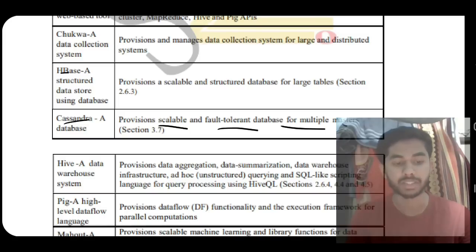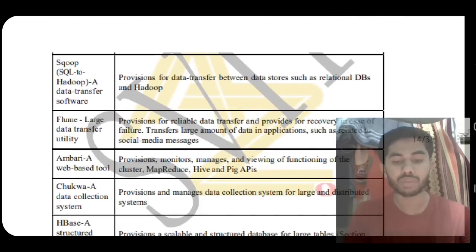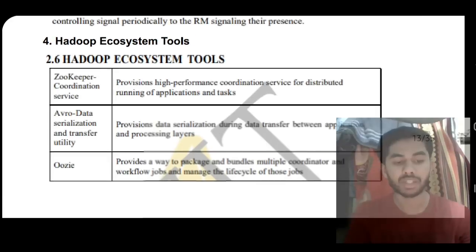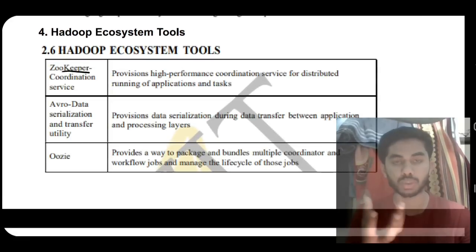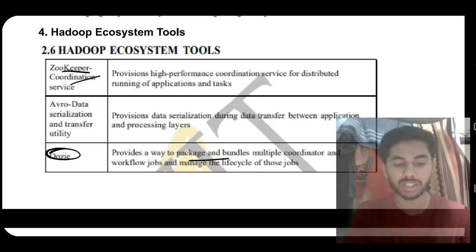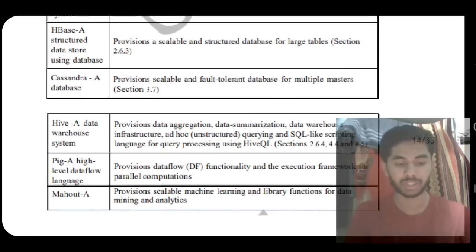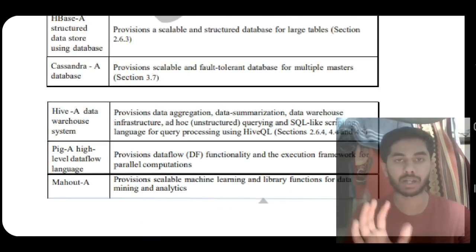Then you have Flume and Scoop, these are two best friends. Flume is for reliable data transfer, Scoop is for data transfer between data stores. After that, we have ZooKeeper, which provides coordination service. Oozie packages the bundles and flows to multiple coordinators. If you memorize this, it's sufficient. There are four more, but at least eight you have to write.